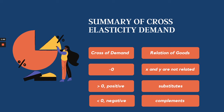If the answer is negative or less than zero, these are complement products, meaning they go together. For example, cereal and milk — if you buy cereal, you also buy milk. Coffee also goes with milk. Sikwate and similar products are also examples of complement products.